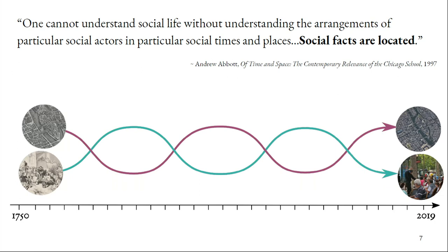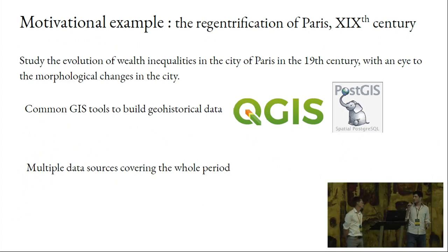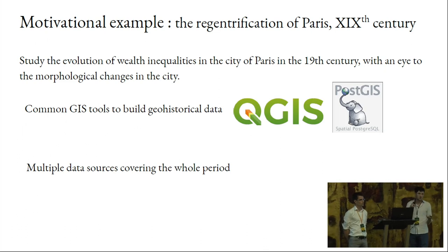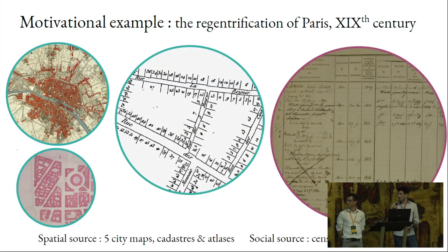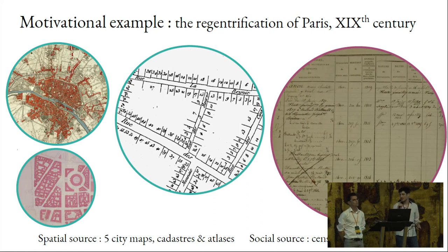When historians are working on social phenomena, they are studying this evolving loop in time using both geographical space and social data. Nowadays, we can use GIS to study this kind of phenomena. A very simple example we are doing right now at my lab is about the re-gentrification of Paris during the 19th century, where the idea is to study the evolution of wealth inequalities in the city over one century with an eye on the morphological changes in the geographical structure of the city. We use a very common GIS stack, mainly QGIS and PostGIS, extracting data from multiple sources covering the whole period — spatial sources like maps, cadastres, and atlases, and social sources like census and inheritance registers, which provide people's names, addresses, and information about their income.